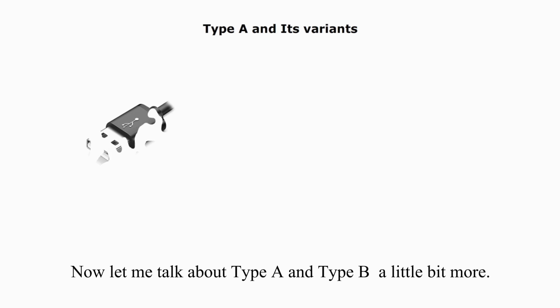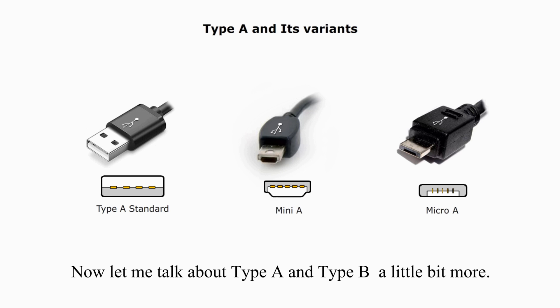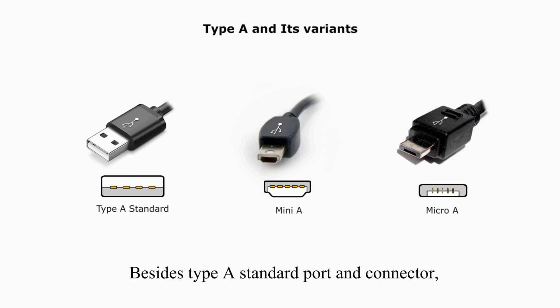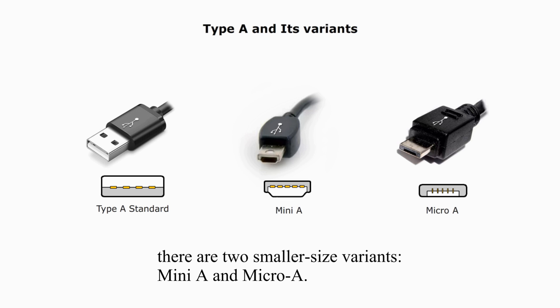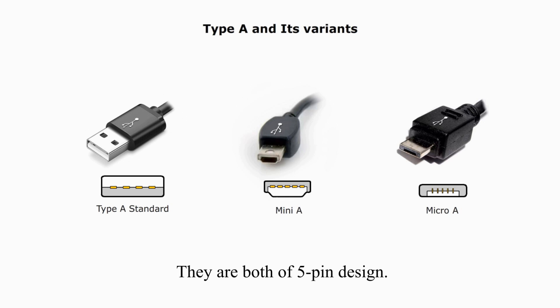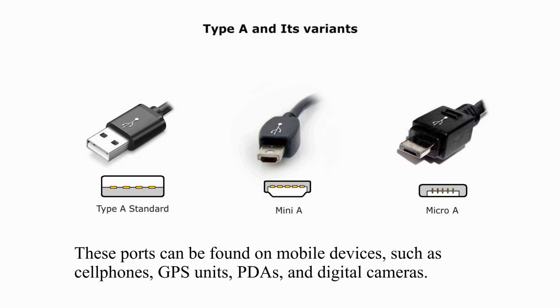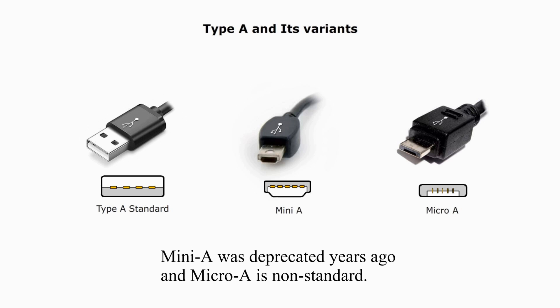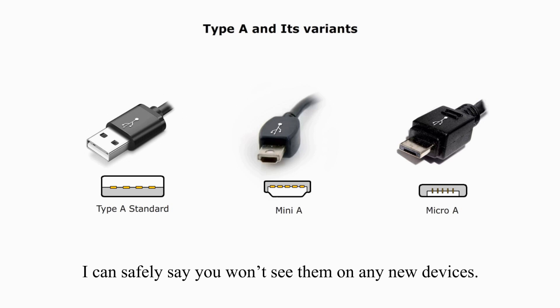Now let me talk about Type A and B a little bit more. Besides the Type A standard port and connector, there are two smaller size variants: Mini A and Micro A. They are both of 5-pin design. These ports can be found on mobile devices such as cell phones, GPS units, PDAs, and digital cameras. Mini A was deprecated years ago, and Micro A is non-standard. I can safely say you won't see them on any new devices.